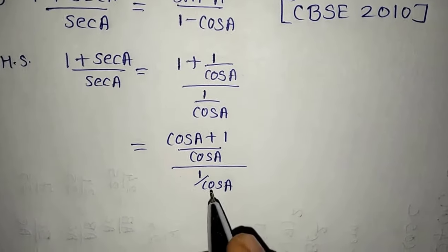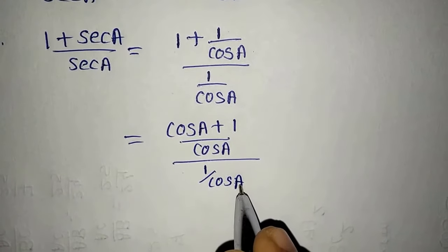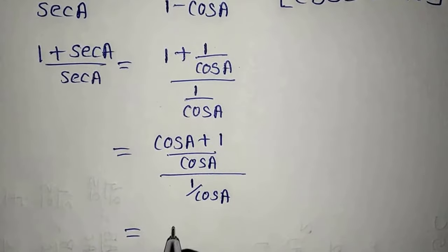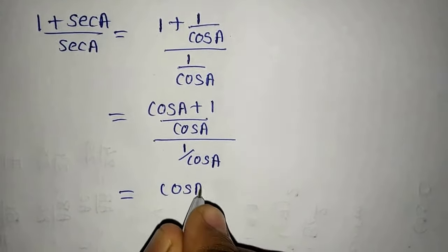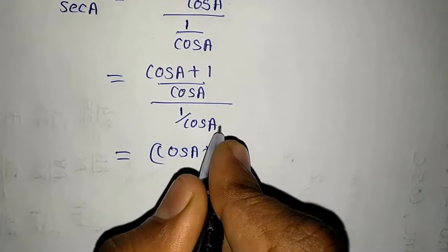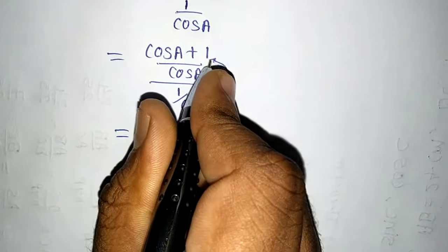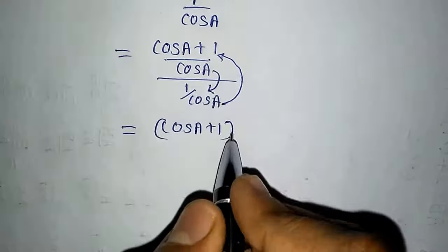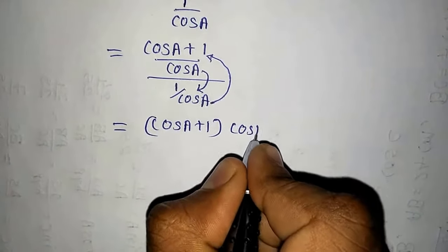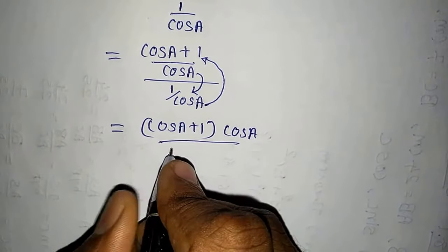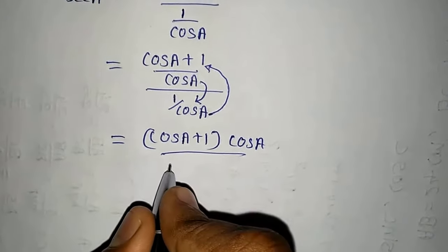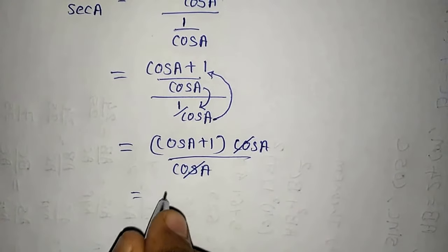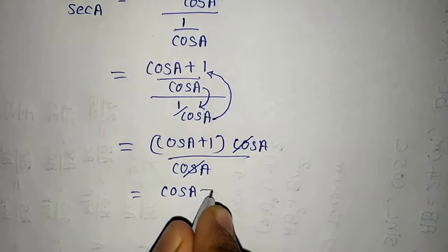Now we can see that here it is cos A. We will bring it over here, and this cos A will come here. So the denominator's denominator goes into the numerator: cos A plus 1, into cos A upon cos A into 1. You can see cos A and cos A will be cancelled. So we get cos A plus 1.